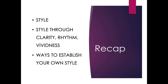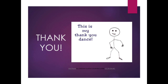And here we are. We started out this unit by talking about style — what style is and the difference between oral and written style. Then we discussed all the tools you now have in your toolbox to establish style through clarity, rhythm, and vividness. And then we talked for a moment about ways that you can intentionally cultivate your own style in public speaking. Once again, it's been great, and I thank you for your time.